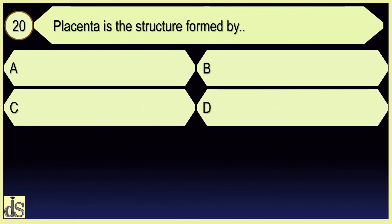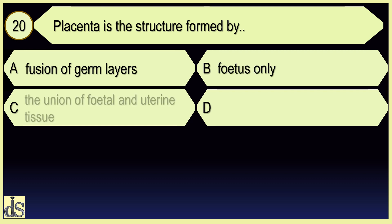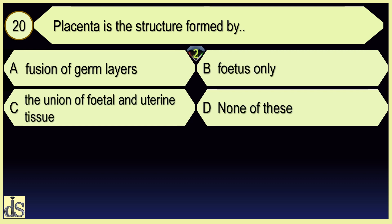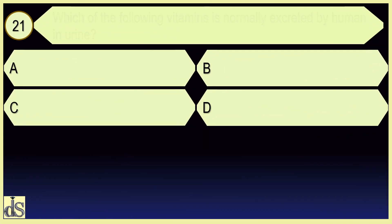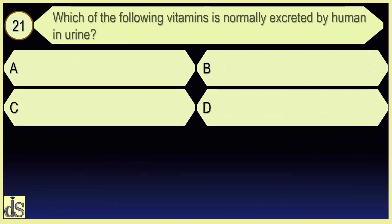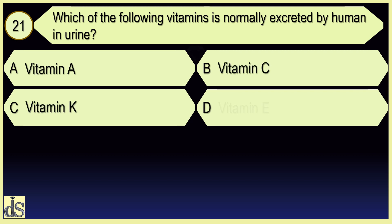Placenta is a structure formed by the union of fetal and uterine tissues.